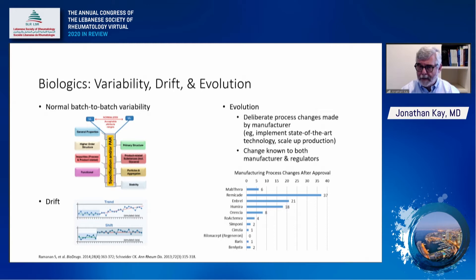These changes are known to both manufacturer and regulators. By 2013, according to an editorial published in Annals of Rheumatic Diseases by Christian Schneider of the EMA, there had been 37 such manufacturing process changes after approval for Remicade, 21 for Enbrel, and 18 for Humira.